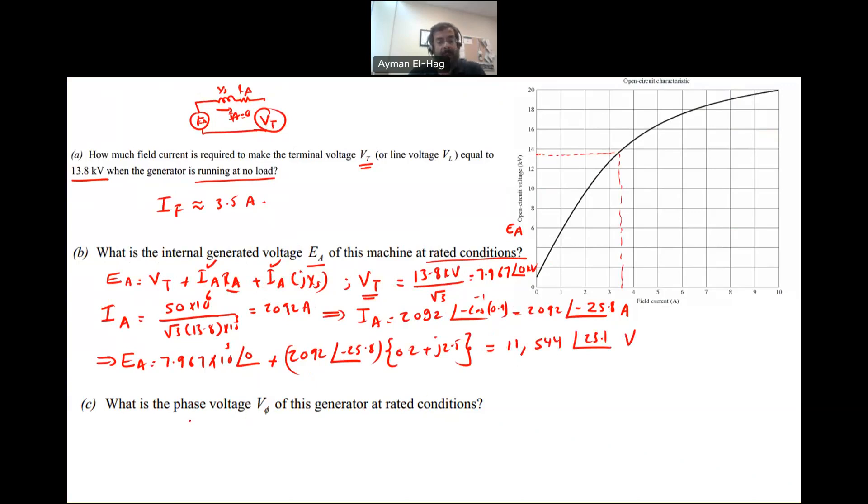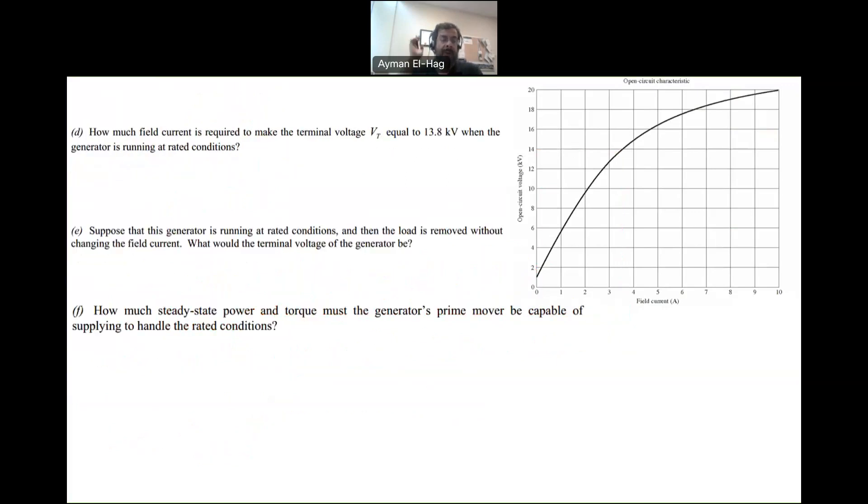Part C: What is the phase voltage at rated conditions? We already know this - it's the terminal voltage of the phase, which equals 7.967 kilovolt. It's already known; we used it in the equation.